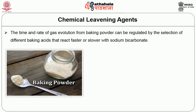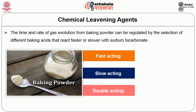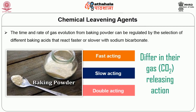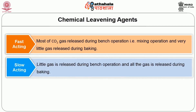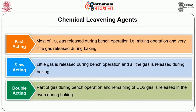The time and rate of gas evolution from baking powder can be regulated by the selection of different baking acids that react faster or slower with sodium bicarbonate. There are three different kinds of baking powder: fast acting, slow acting, and double acting, which differ in their carbon dioxide releasing action. In fast acting baking powder, most of the carbon dioxide gas is released during the bench (mixing) operation, with very little gas released during baking. In slow acting, little gas is released during bench operation and all the gas is released during baking. In double acting, part of the gas is released during bench operation and the remaining carbon dioxide is released in the oven during baking.